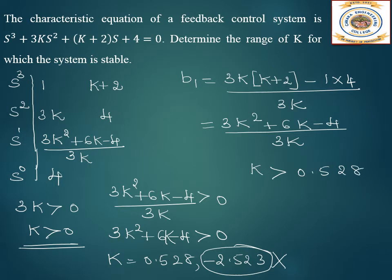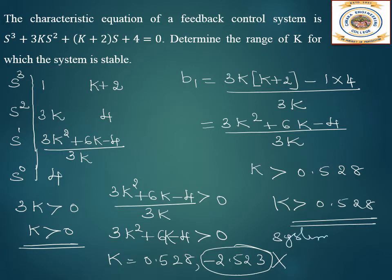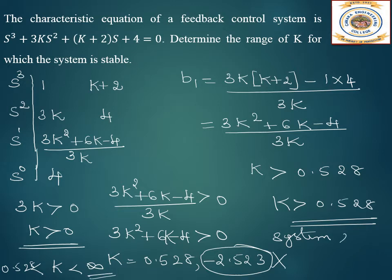For any value of k greater than 0.528 the system is stable. So the range is k > 0.528, or equivalently 0.528 < k < ∞. This is the range of k for which the system is stable.